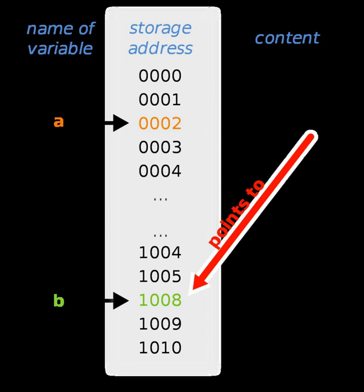The actual format and content of a pointer variable is dependent on the underlying computer architecture. Using pointers significantly improves performance for repetitive operations like traversing iterable data structures, e.g. strings, lookup tables, control tables and tree structures.